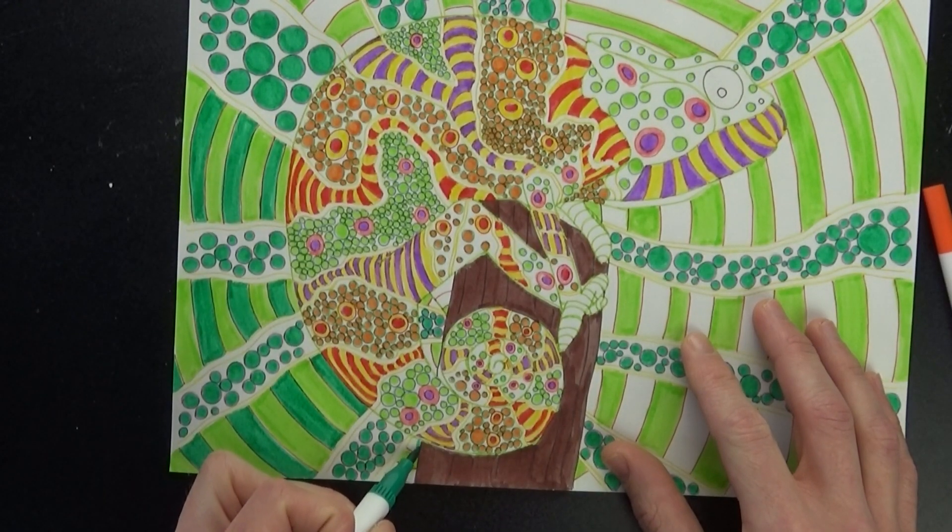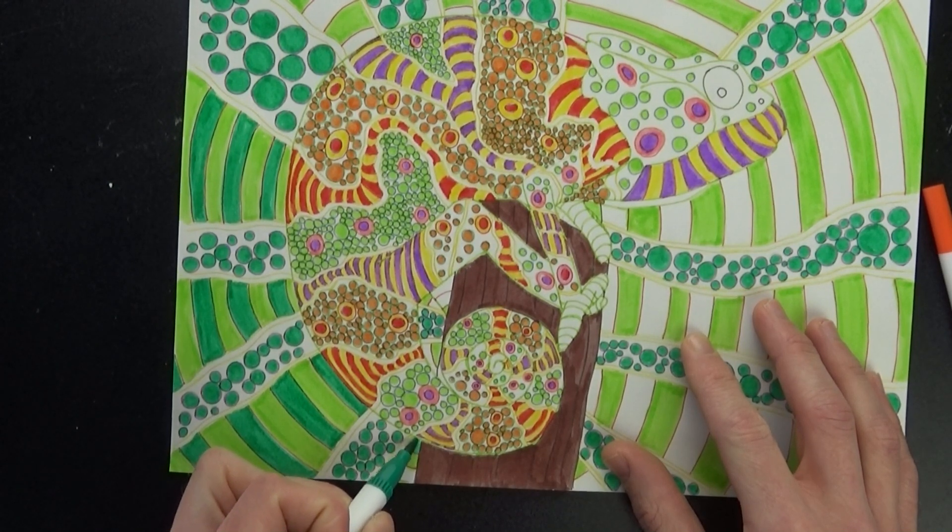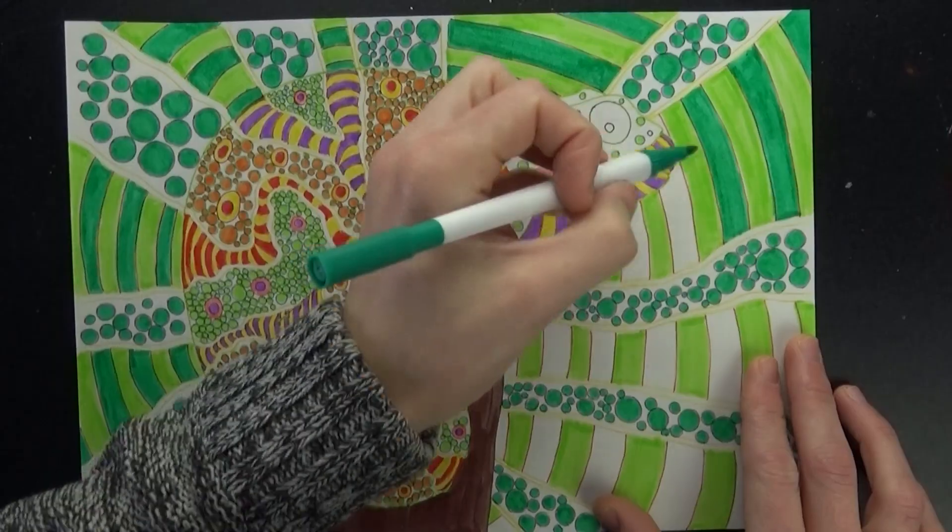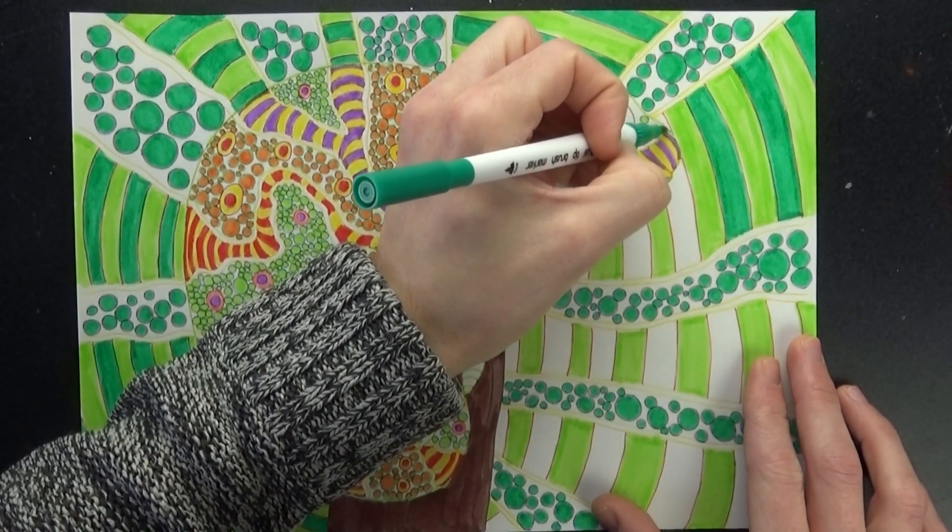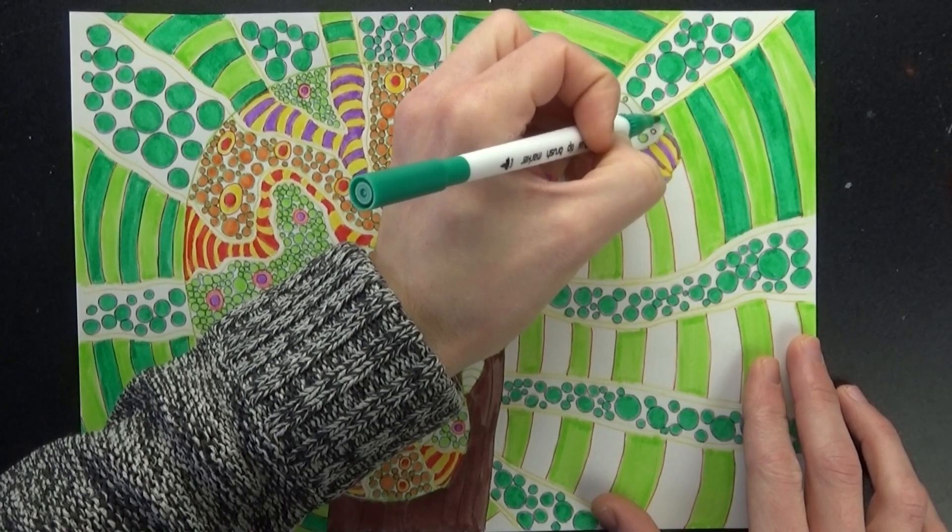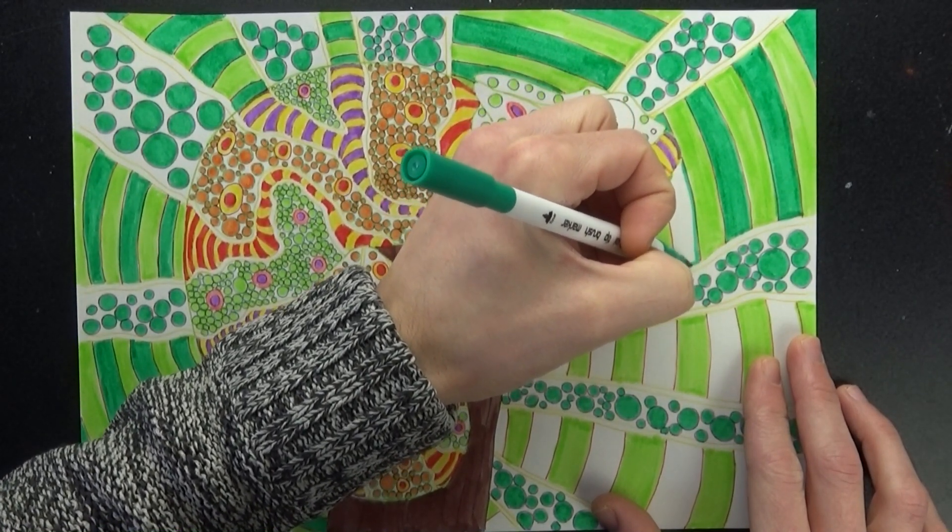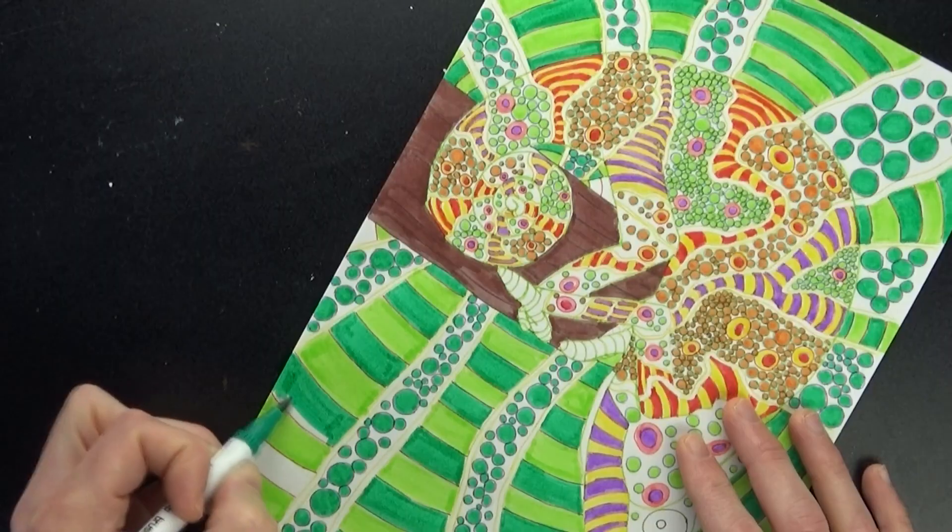So as mentioned before, these are dual tip markers meaning one end has a fine tip for the small details and the other has a broad brush tip for the larger areas. There are twelve colors to choose from in the set, so plenty of choice. And I can confirm that both the fine tip and the brush tip are very satisfying to use, very nice to use in hand.